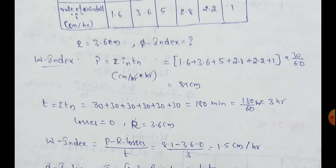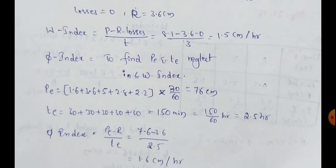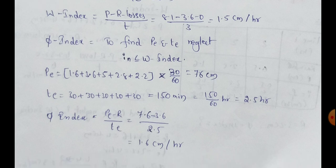So pi index is equal to pe minus r by te. Pe value is 7.6. Runoff value is 3.6. Te value is 2.5. So finally we get 1.6 cm per hour. So this is pi index value.